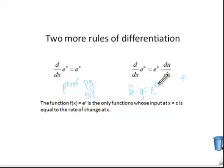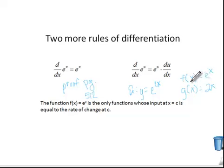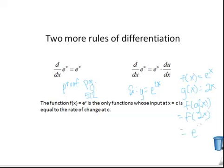Here is an example: y equals e to the 2x. This is a composition function where the outer function f of x is e to the x, and the inner function g of x is equal to 2x. What we're going to do is take this inner function g of x and plug it into our outer function f, giving us e to the 2x as our composition function.